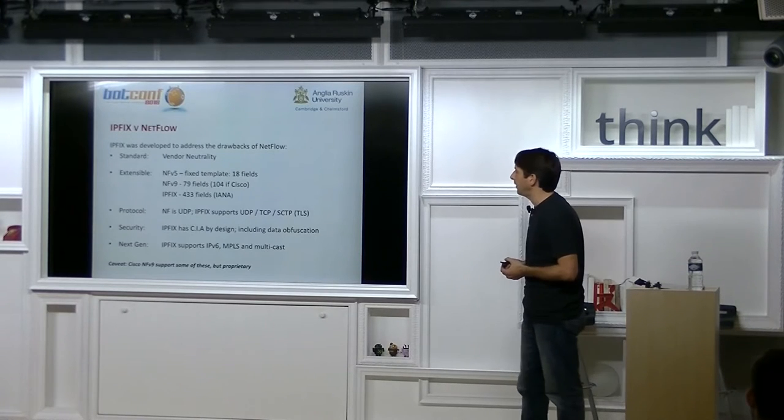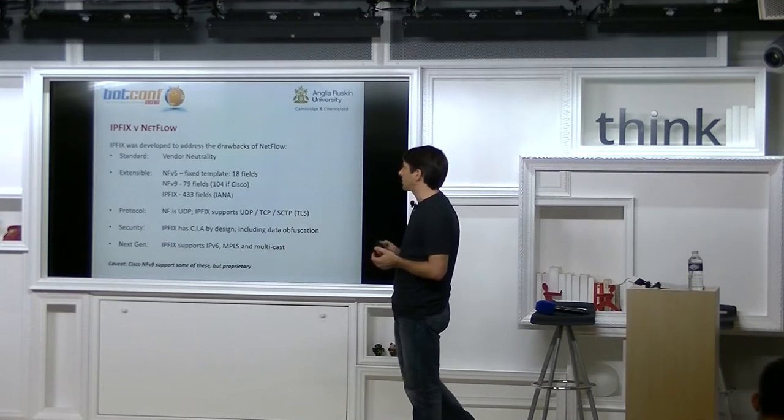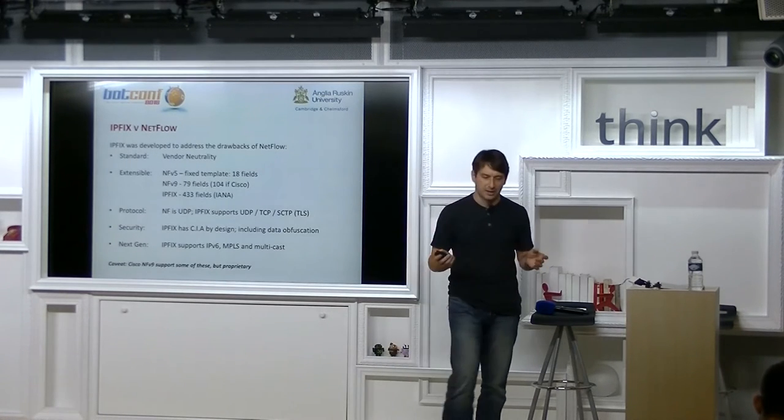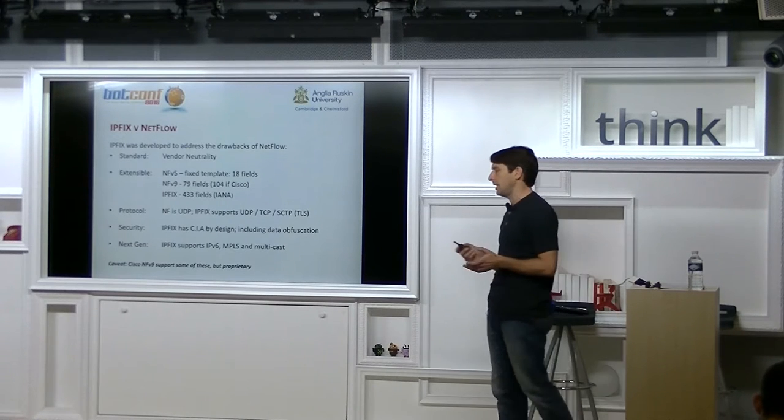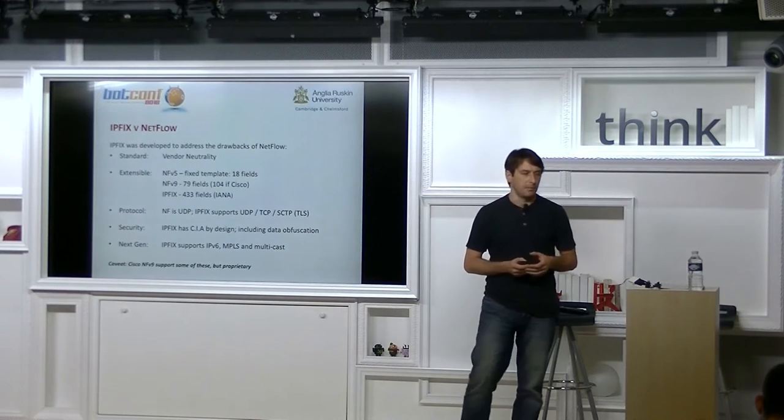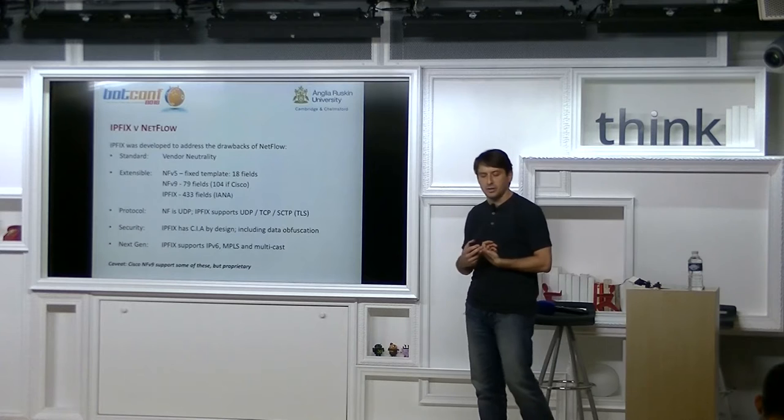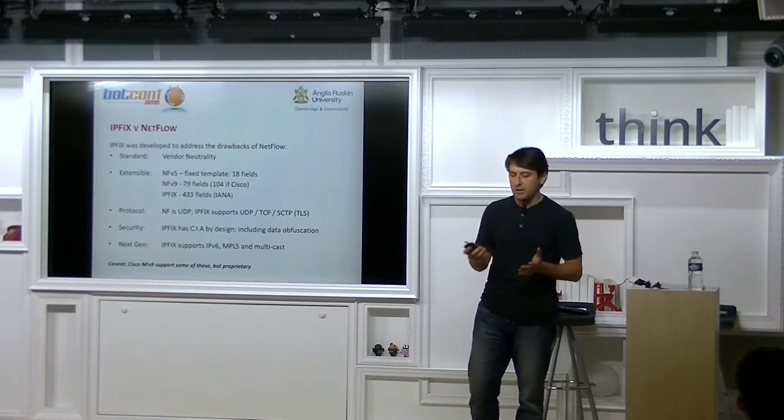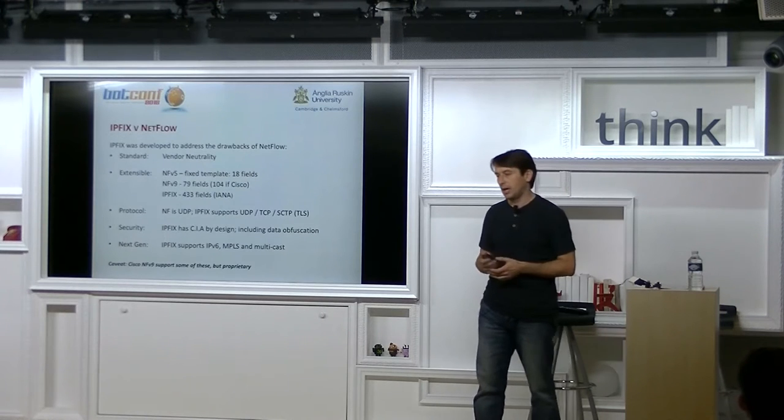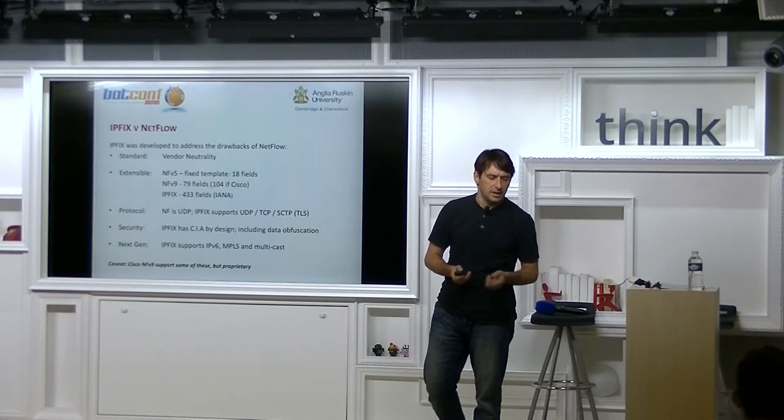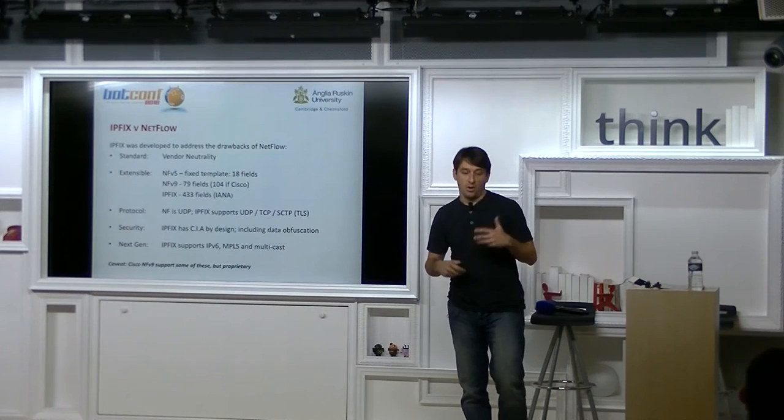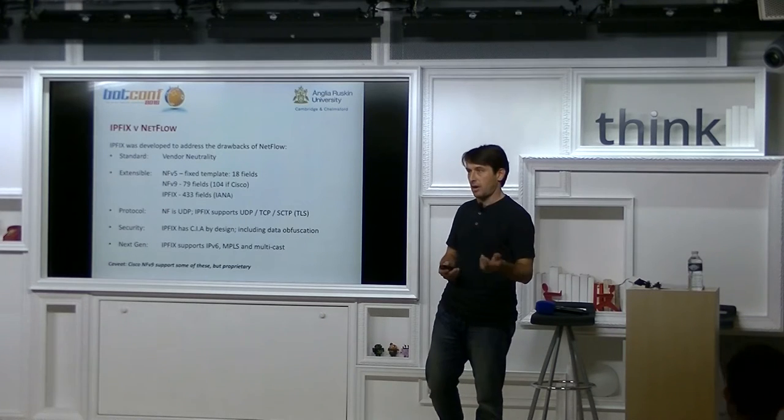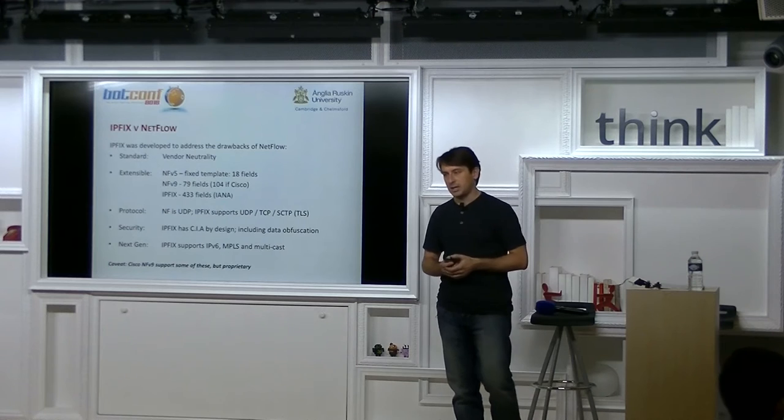So for cloud service providers that have thousands of flows on their network every day, that is a massive saving in terms of storage space and potential analysis of that data later on. So in summary, we normally equate PCAP to a phone call. So between two people, PCAP is the content of that phone call. Whereas flow tends to be equated to the phone bill. So who called who, when they did it, and for how long. So pretty much the same information, but without the payload. So as I said earlier, Cisco invented the protocol NetFlow. And IPFix was developed to address some of the drawbacks of NetFlow. One of the biggest issues is NetFlow is proprietary. So Cisco have a version of NetFlow, Huawei have a version of NetFlow, HP have a version, et cetera. So every version of NetFlow is slightly different. If you have a multi-vendor environment, really you need to be looking at IPFix. So IPFix gives us vendor neutrality.